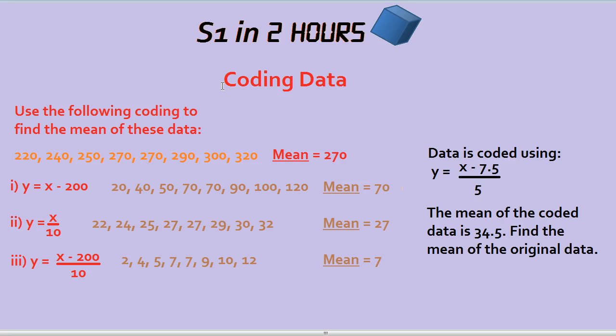Let's see how we do that. Let's take this code here on the left, x take away 200. What do we have to do there? Well, it's quite self-explanatory because we simply take away 200 from each of the data. So 220 take away 200 is 20, and you get a new data set. Then, we could find the mean of that data set, and we'd find out that it's 70.